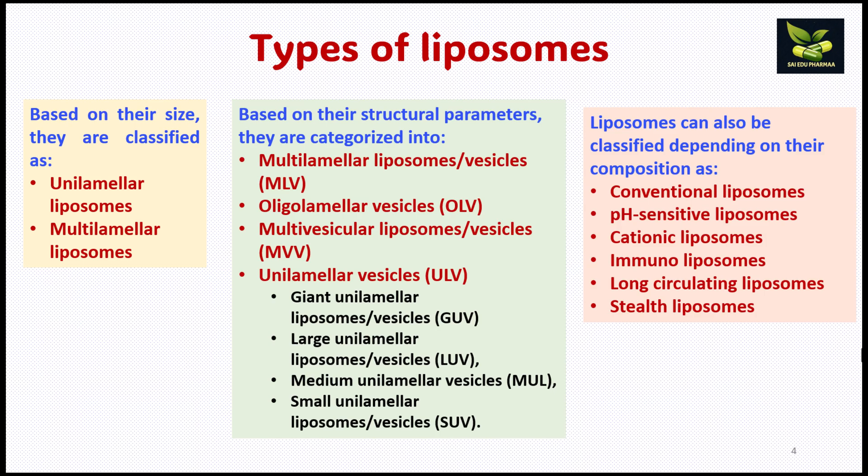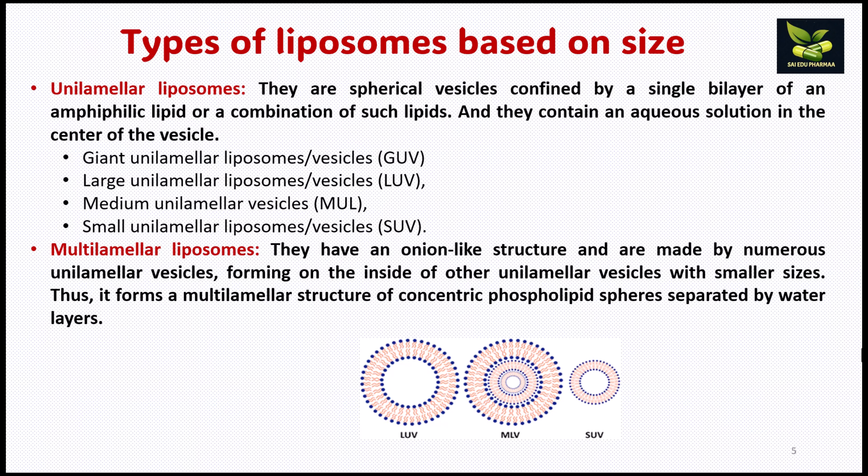All these types we will now be discussing one by one. On the basis of size, when there is only one layer — that is, a single bilayer of an amphiphilic lipid or a combination of such lipids — then it is called a unilamellar liposome. In the center there is an aqueous core. On the basis of size, we have small, medium, large, and giant.